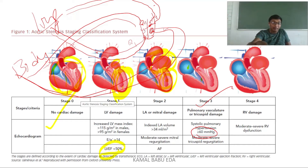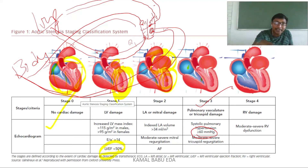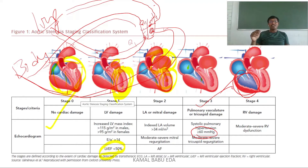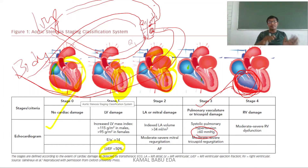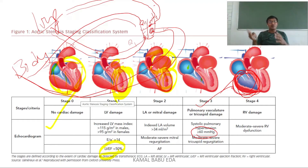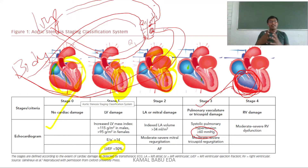In Stage 3, both the mitral valve and tricuspid valve are damaged. In Stage 4, the right ventricle is completely damaged. Because of the pressure gradient, blood is not going out to the body and is circulating only between the heart and lungs, causing pulmonary edema and complete heart damage.